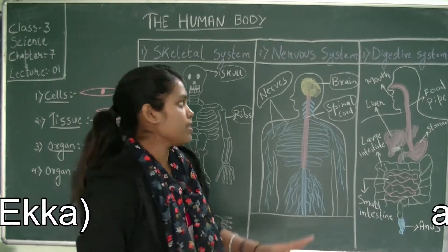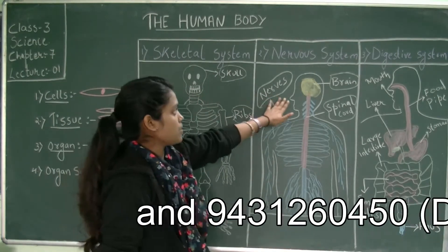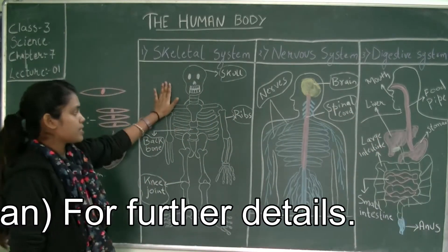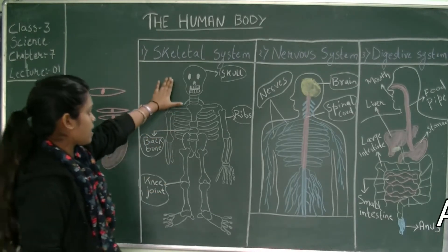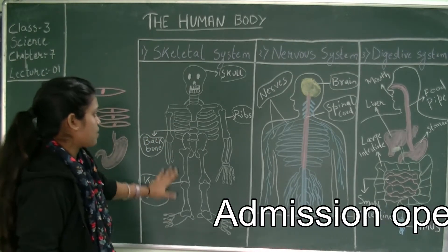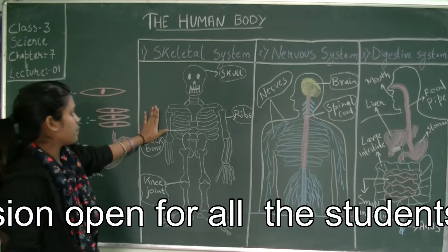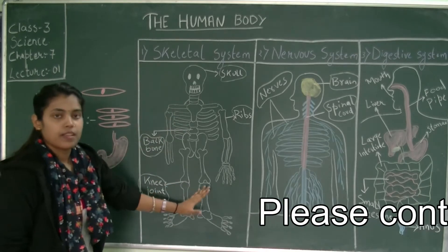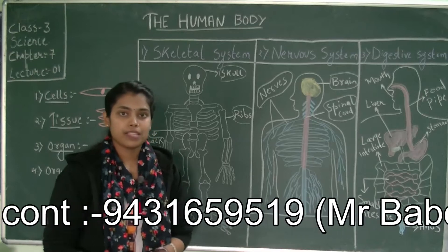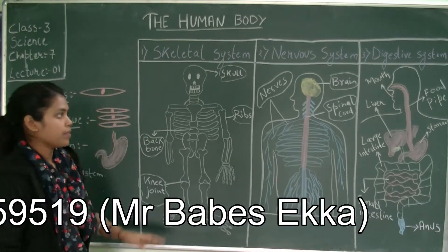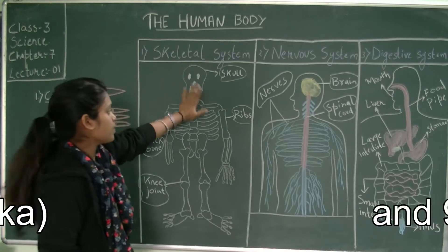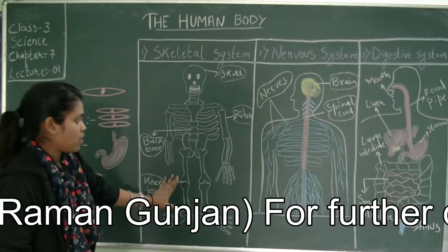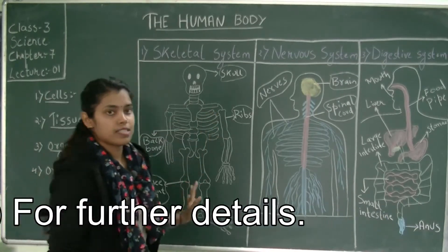The first three organ systems I will cover are the skeletal system, the nervous system, and the digestive system. Let's talk about the skeletal system first. You can see this is a proper skeletal system. The skeletal system consists of bones — there are a total of 206 bones in a human body. It consists of the skull, the ribs, the backbone, and the knee joints.